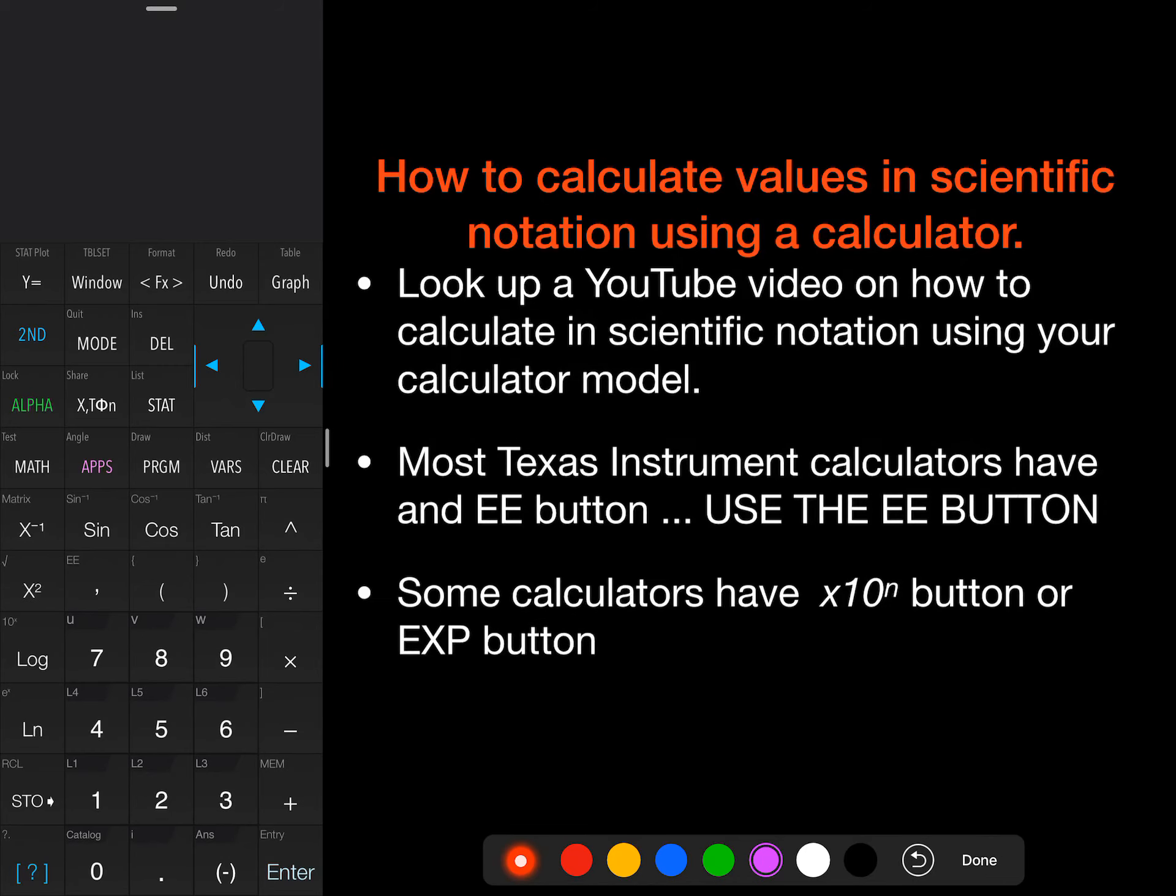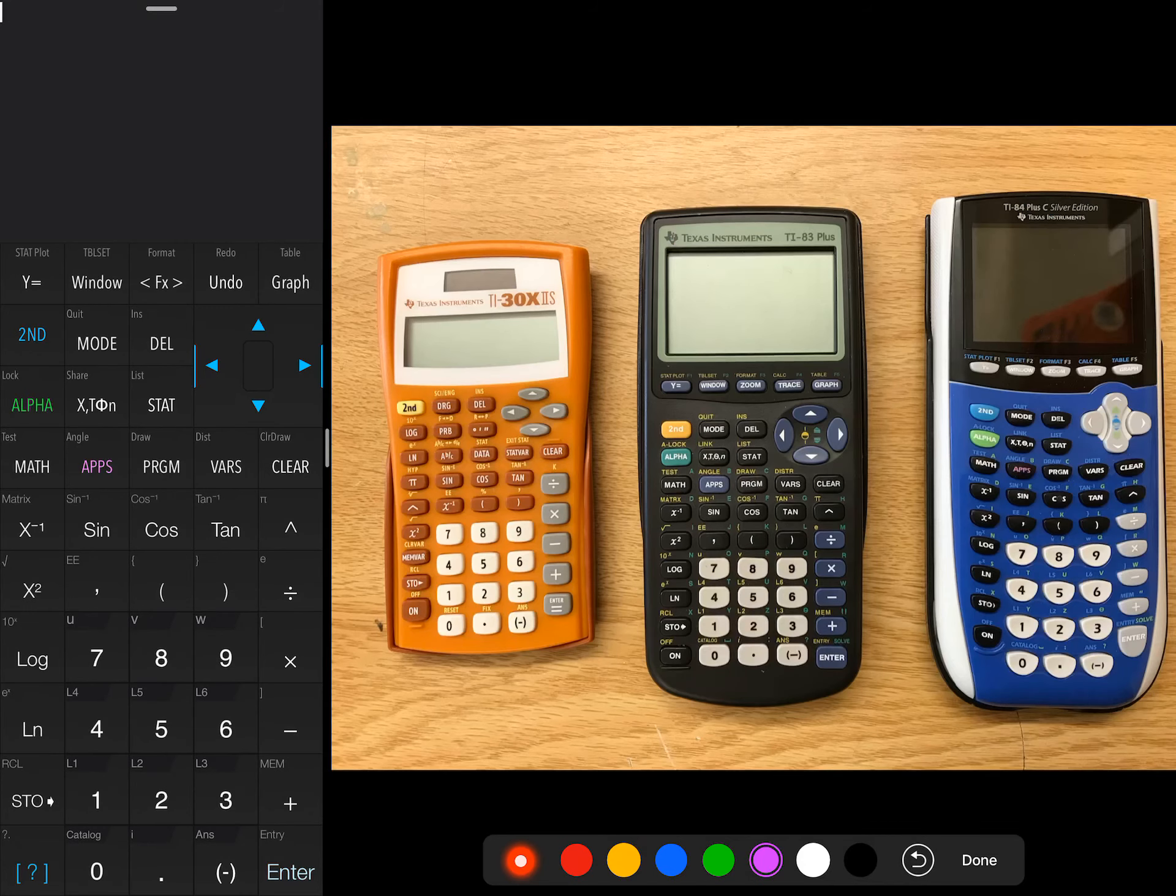Some calculators have a times 10 to the N button. There's actually a specific TI model that does that, or possibly an EXP button. And so if you have a different version of a calculator, you might see a button that looks like that. So here we have three different models of TIs. And the EE button that we're really looking for is right above the 7. It's this button right above the 7. And you will see that in the same location on all three different models.